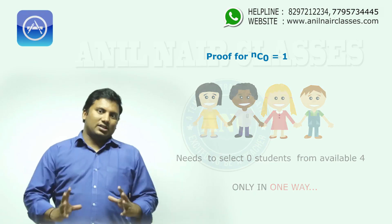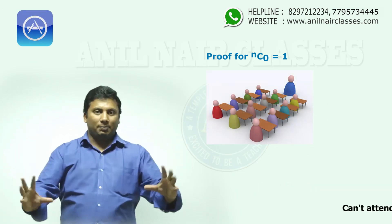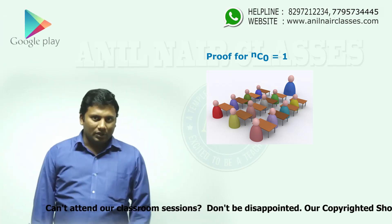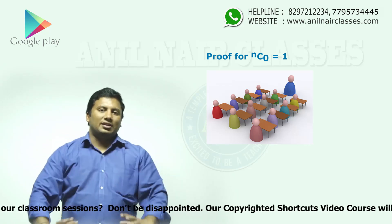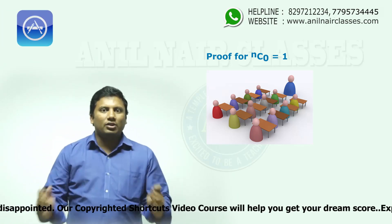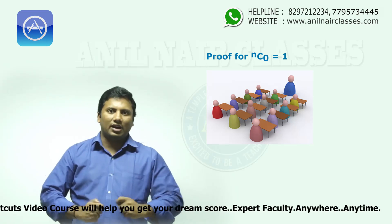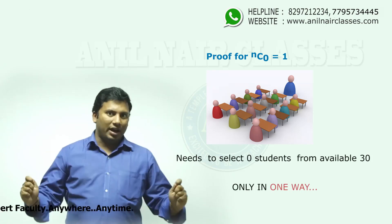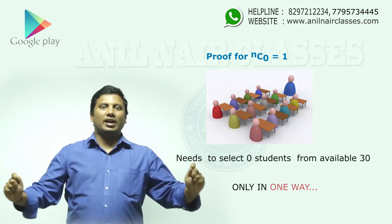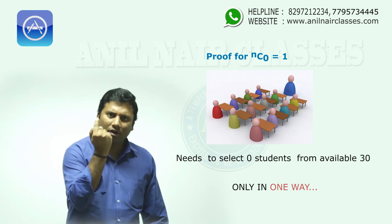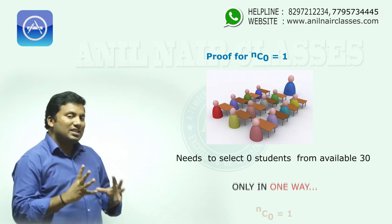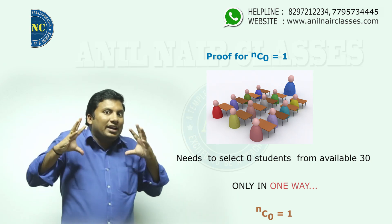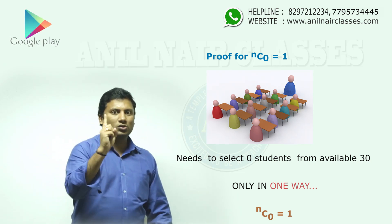Suppose another example. I conducted an exam for 30 people and I said that I will select people who get greater than 25 marks. But none of the students got greater than 25 marks. I entered into the class, gave the answer sheets to everyone, and said I am not selecting any. In how many ways can I do it? Only one way. That means I decided not to select anyone — in how many ways can I decide not to select anyone? Only one. NC0 equal to 1, meaning the number of ways of not selecting anyone from N people is always one way.